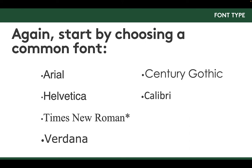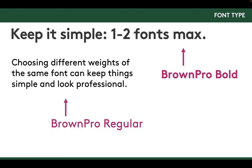If you're designing with Playfair and sharing that document with a collaborator, or creating a contract that someone is going to download and open in Microsoft Word, if they don't have Playfair installed on their machine, their machine is going to substitute a different font — so you might not get the same results you intended. As you begin adding fonts to your page, keep it simple. One to two fonts maximum is a good rule of thumb. You can get a lot of mileage by choosing different weights of the same font — for example, Brown Pro Bold for the headline and Brown Pro Regular for body text.